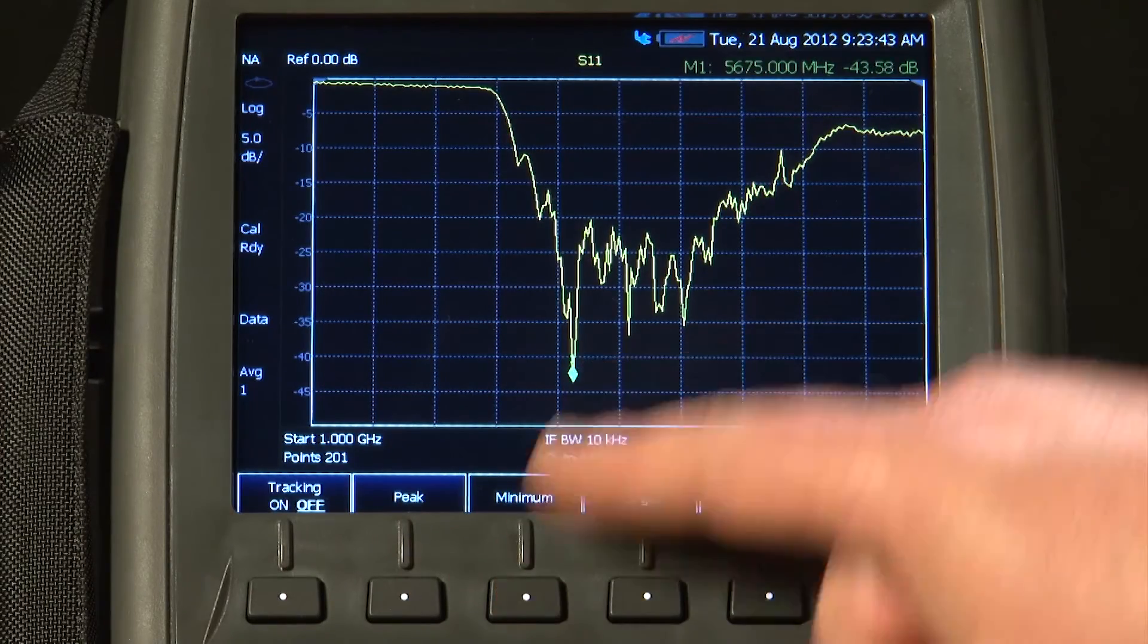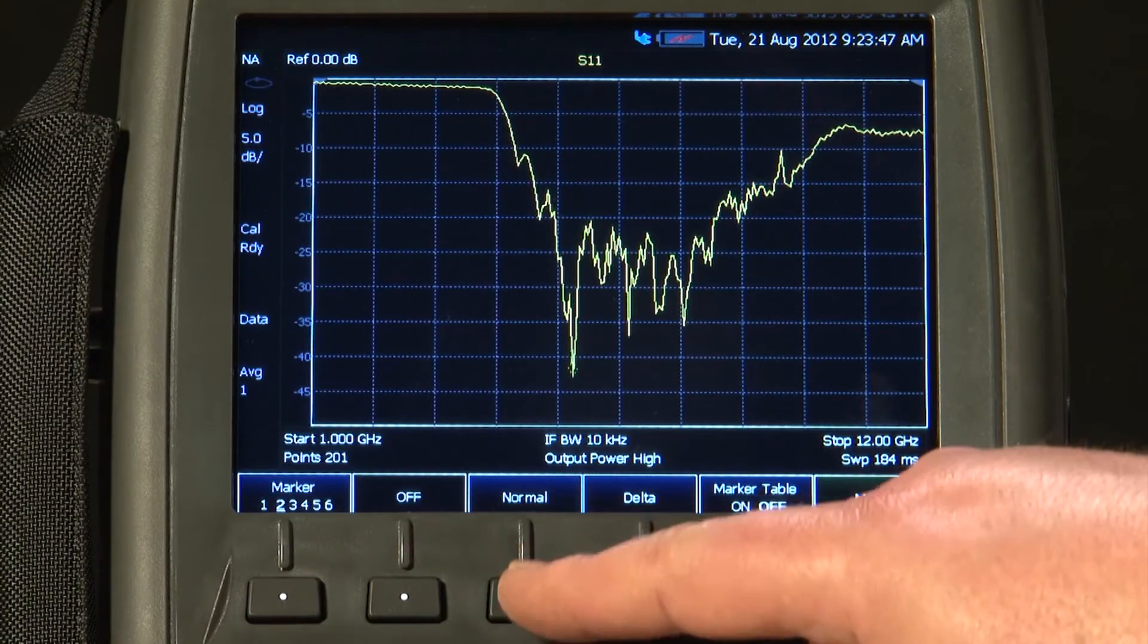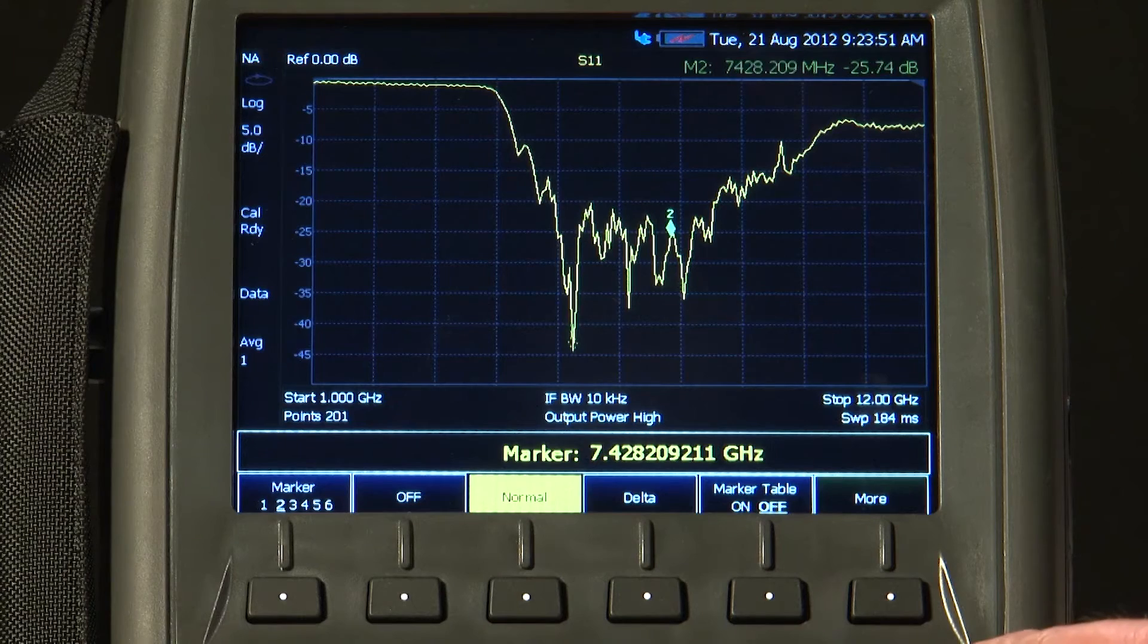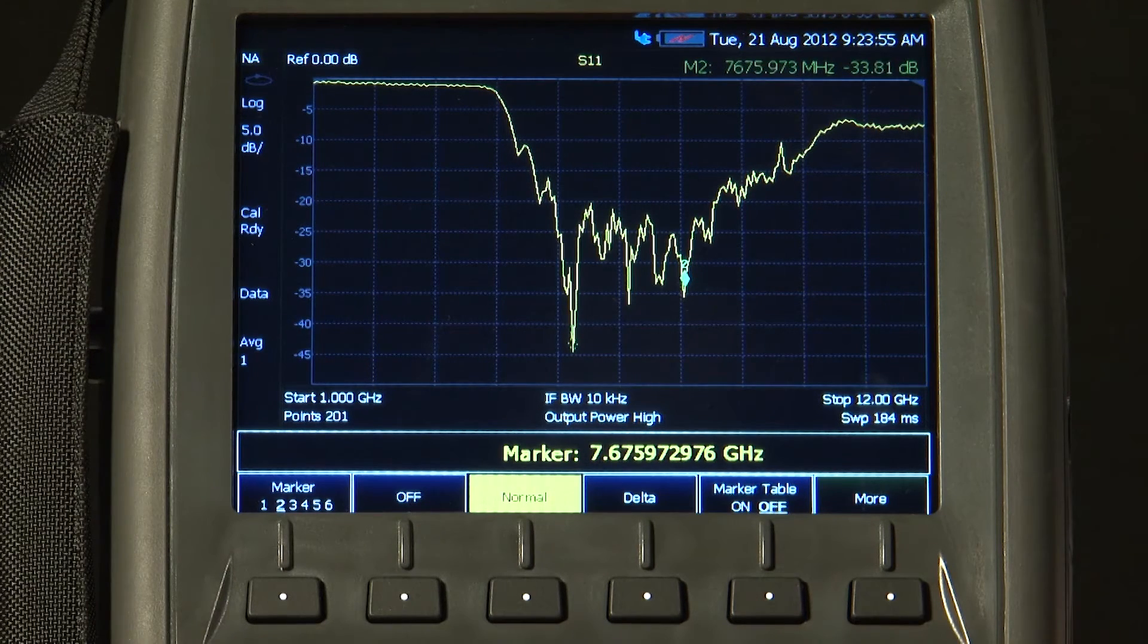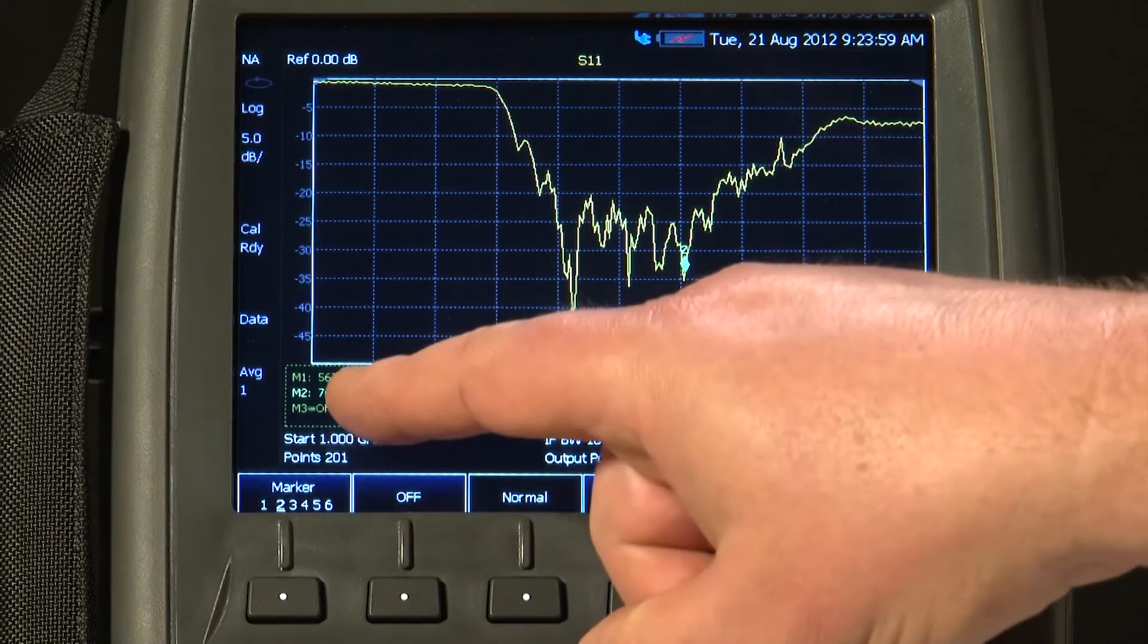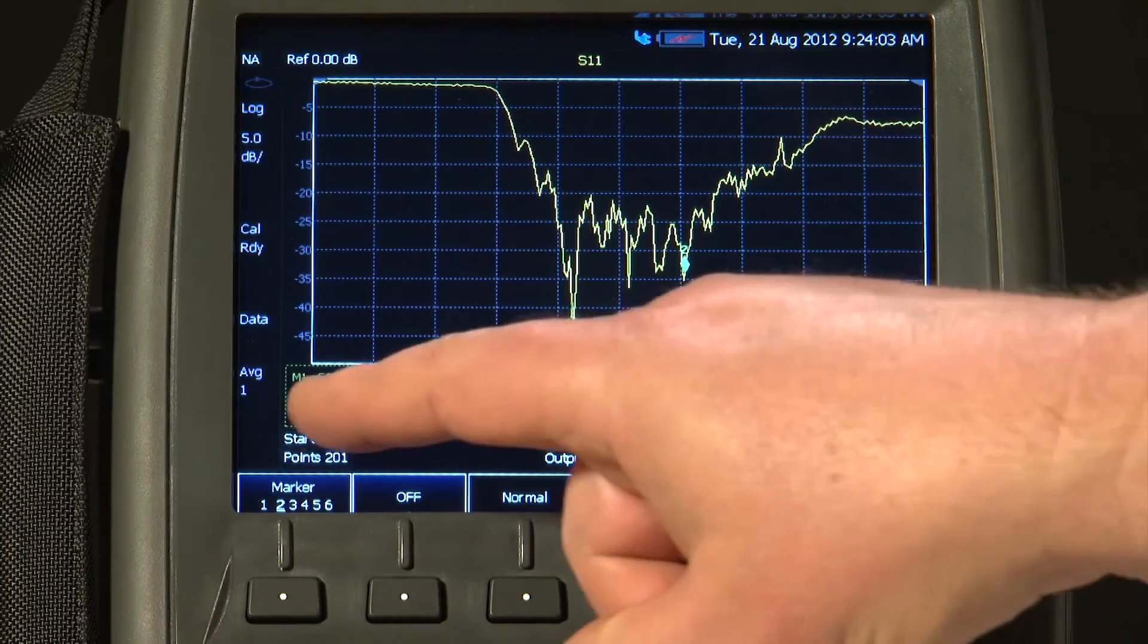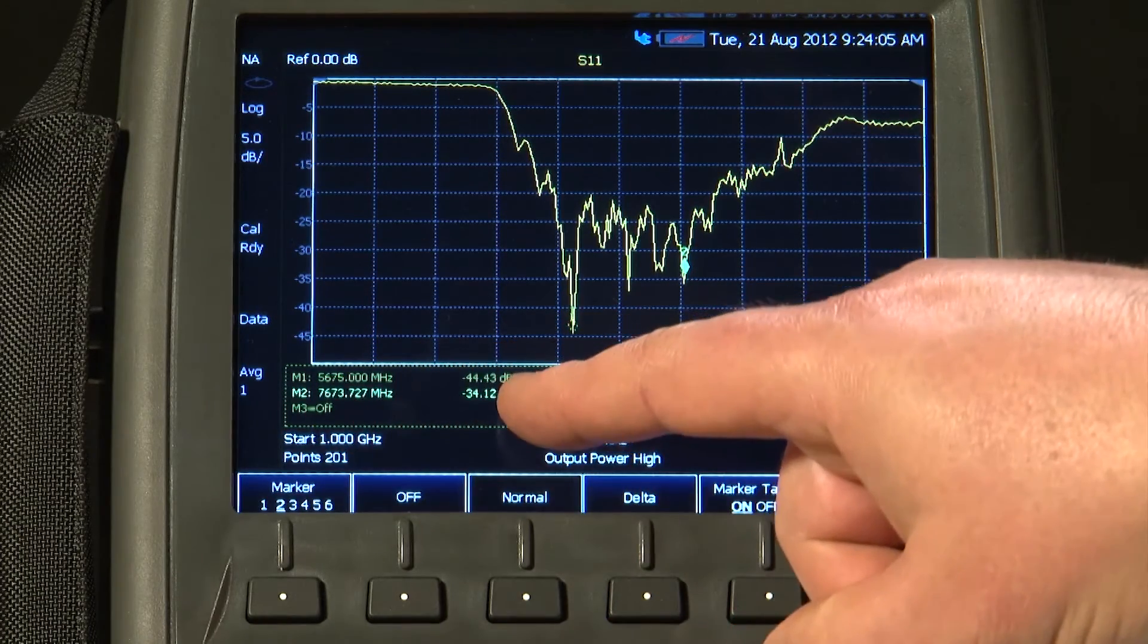Let us line that marker up with the minimum, and let us turn on another marker, and perhaps move that across to this minimum here. And another nice feature on the FieldFox, there is a marker table. You may be able to see the marker 1 frequency and the return loss, and marker 2 frequency and its return loss.